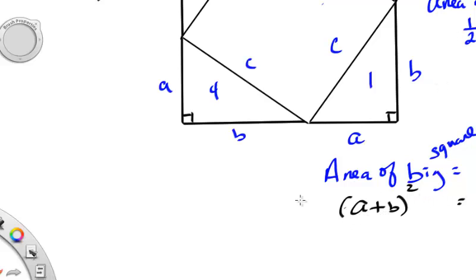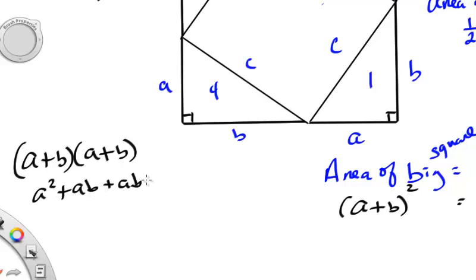Watch. If we foil this, I'll do that over here, A plus B times A plus B. First, outside, inside, last. That'd be A squared plus AB plus AB, I'm rolling through this, plus B squared. Just foil it. First, outside, inside, last. And you'll see this. Even though it's BA, I turned it around to AB.